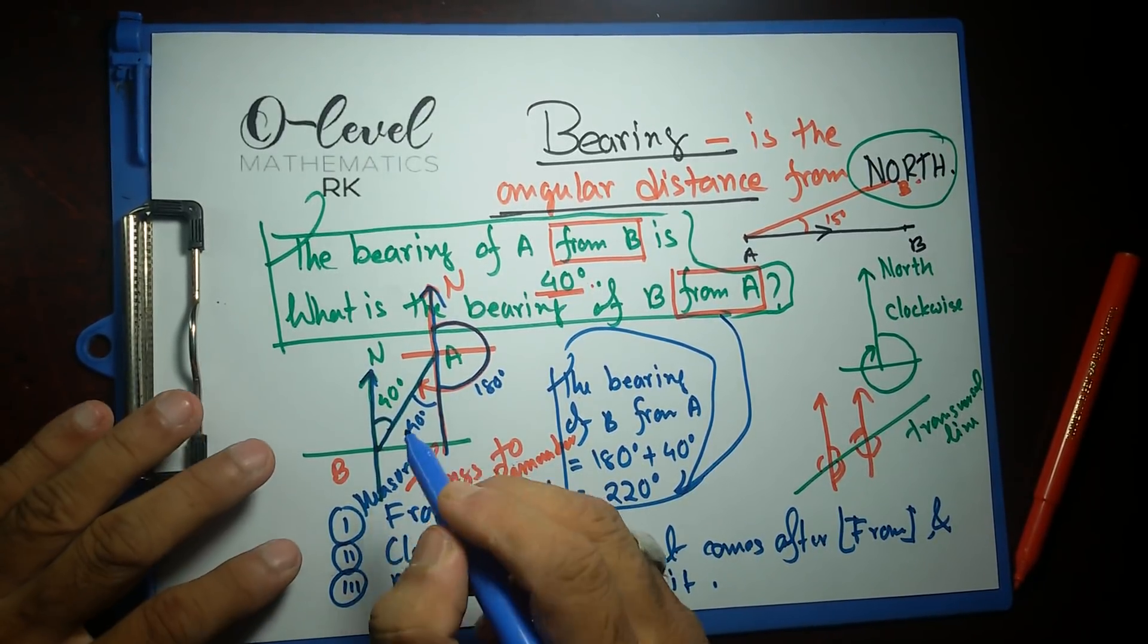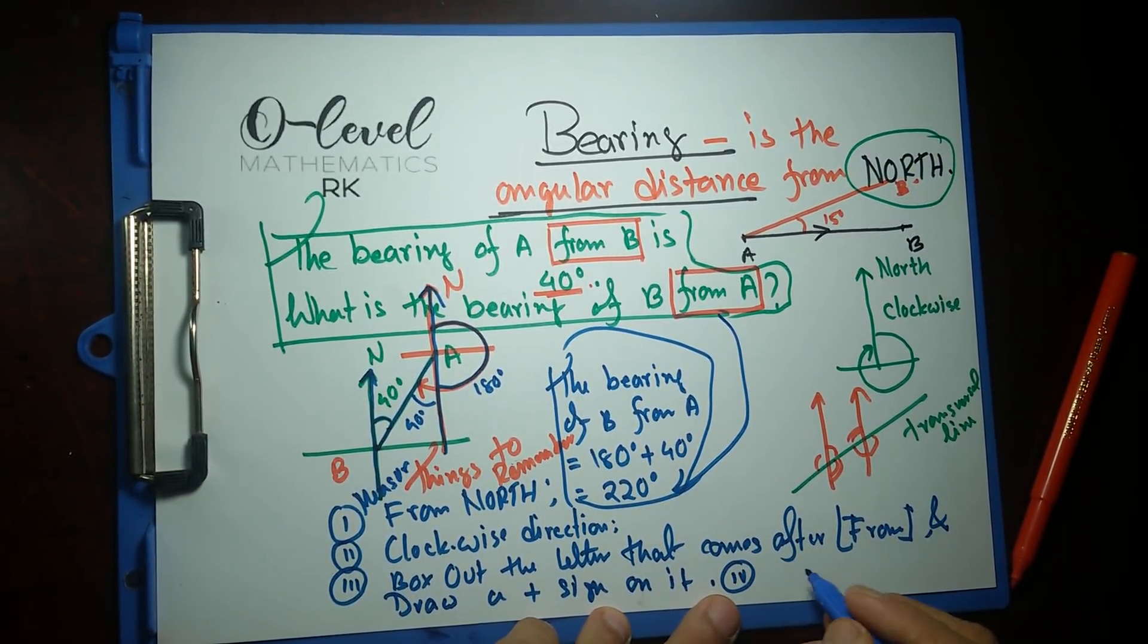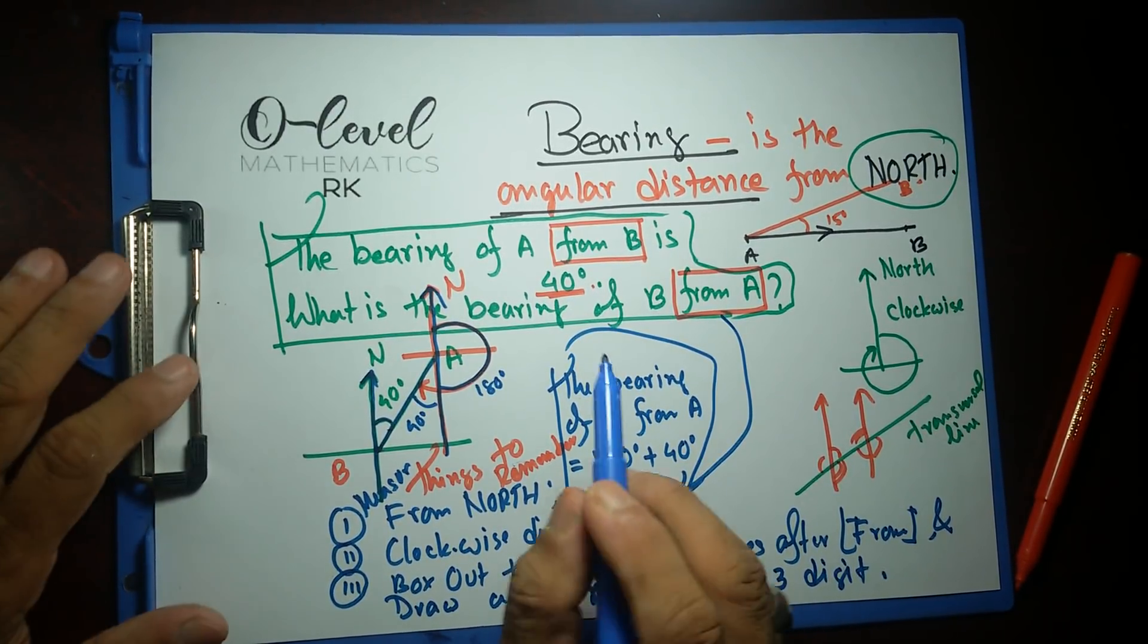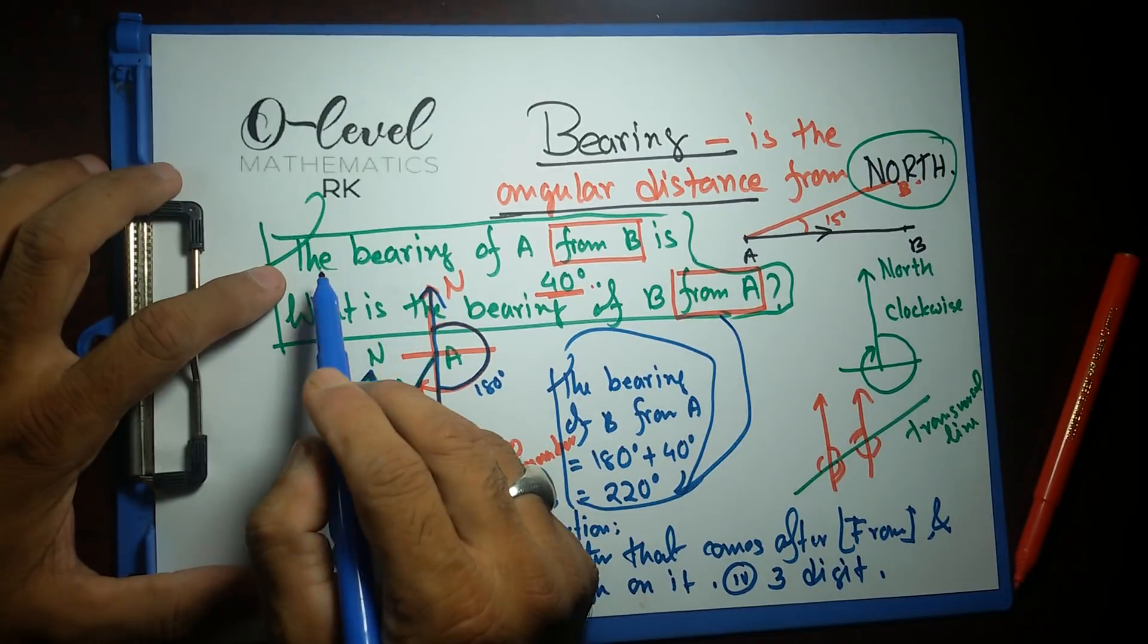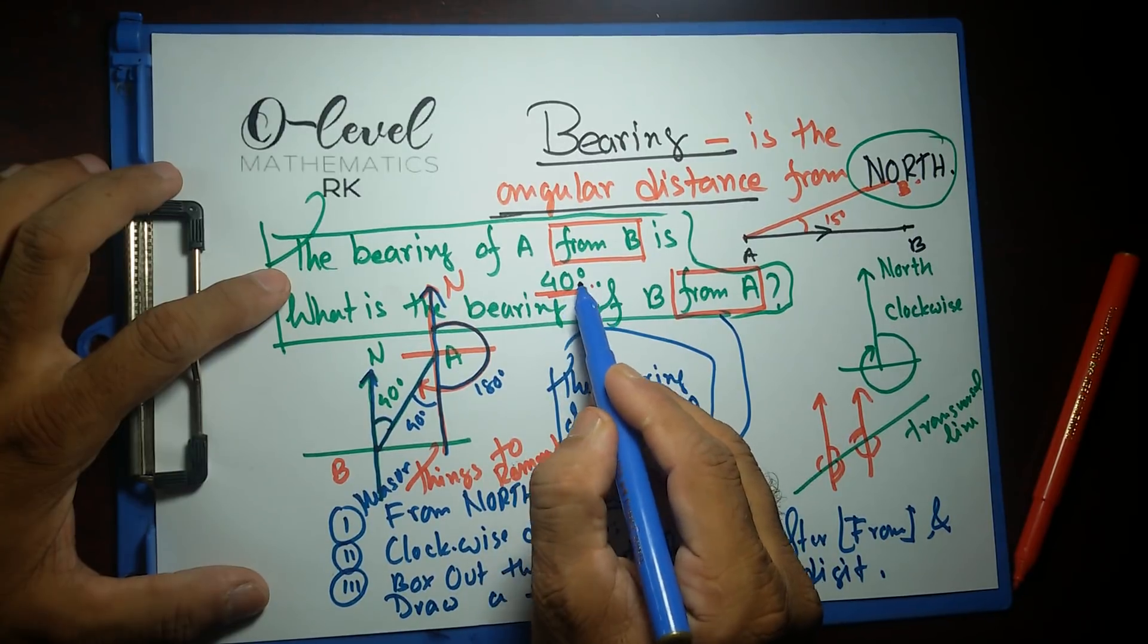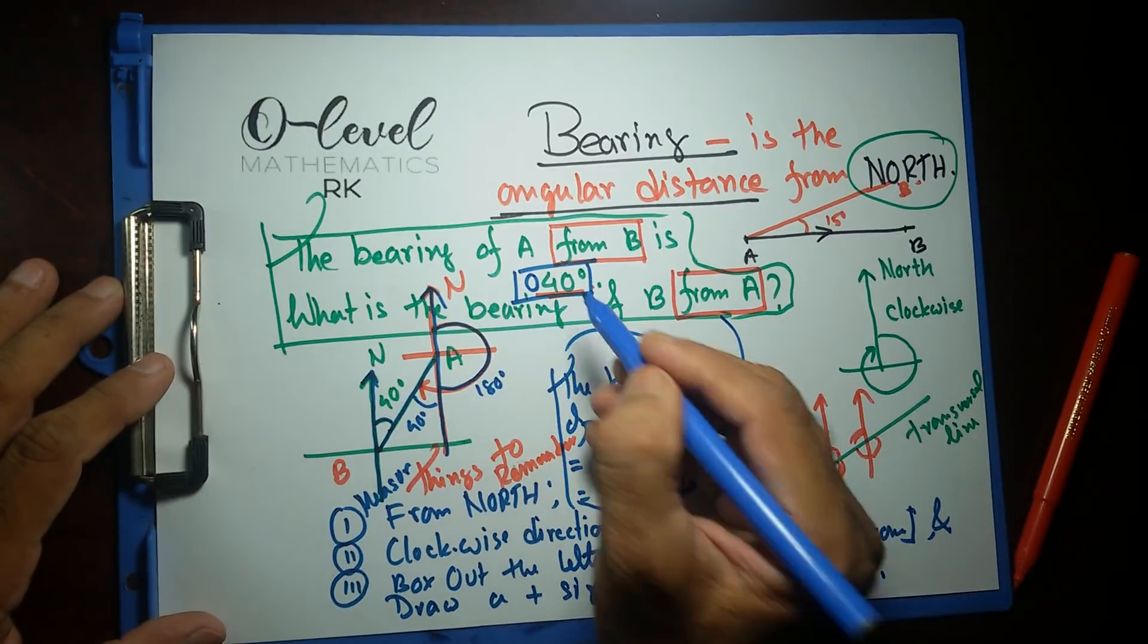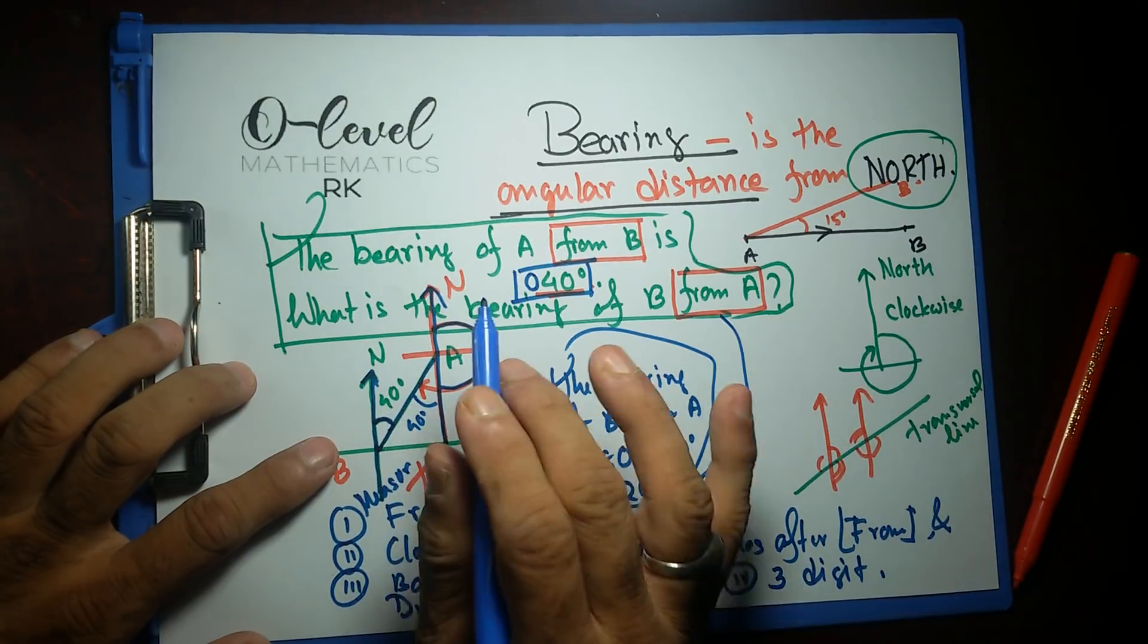And one thing I didn't mention over here—I think I'm running out of space—always try to give your bearing in three digits. Write your bearing in three digits. If you look closely, the question when I wrote it down, I wrote it down something wrong on purpose. The bearing of A from B is not going to be written as 40 degrees. We have to put three digits. So in front of it, we have to put 040 degrees. And this one is angle. It's not bearing, it's angle. So angle is 40 degrees, two digits is fine.